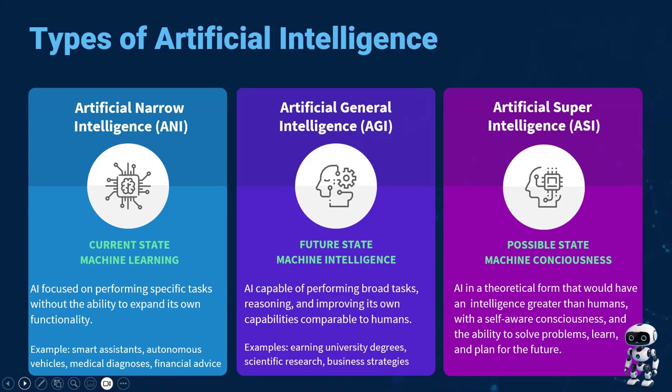AI is being used more and more in the medical field to help with medical diagnoses, and to provide financial advice in the financial sector. The next type is a future state called artificial general intelligence, or machine intelligence. In this state, AI is capable of performing broad tasks — it can reason and improve its own capabilities comparable to how humans can. Some examples include AI being able to earn a university degree, do scientific research, and come up with business strategies.